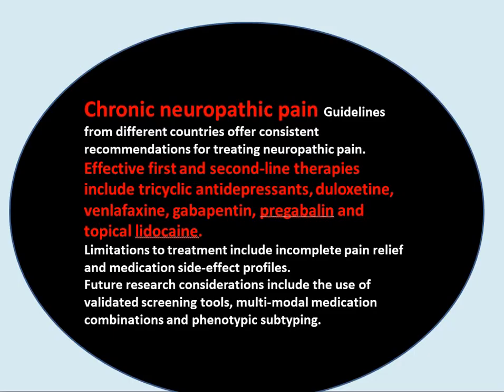Chronic neuropathic pain guidelines from different countries offer consistent recommendations. Effective first- and second-line therapies include tricyclic antidepressants, duloxetine, venlafaxine, gabapentin, pregabalin, and topical lidocaine. Limitations include incomplete pain relief and medication side effect profiles. Future research considerations include use of validated screening tools, multimodal medication combinations, and phenotype subtyping.